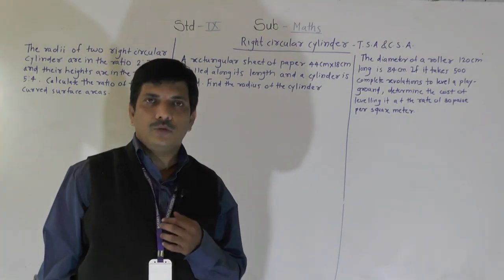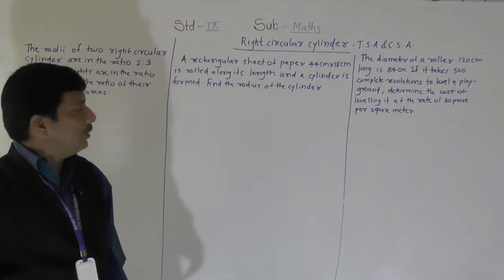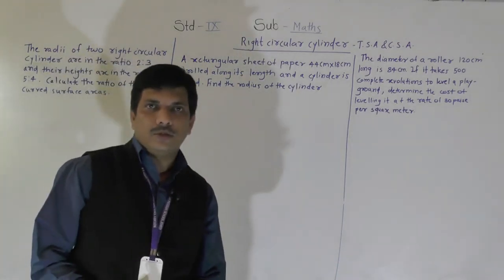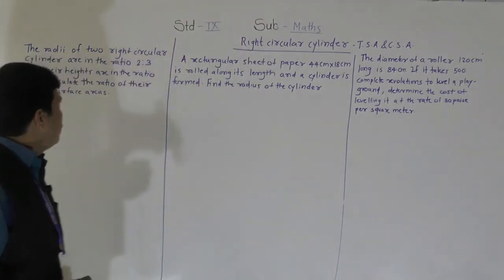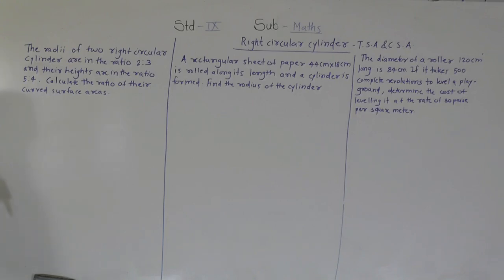Hello everybody, today we are going to solve some problems which depend on the total surface area and curved surface area of a cylinder. The first problem is: the radii of two right circular cylinders are in the ratio 2:3 and their heights are in the ratio 5:4. Calculate the ratio of their curved surface areas.